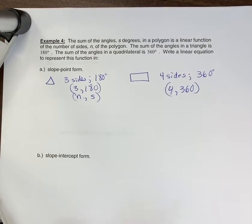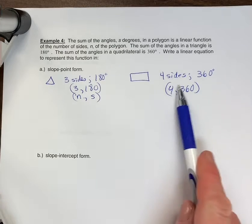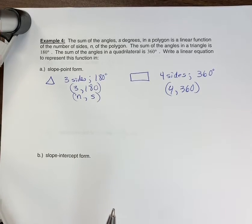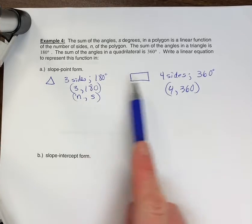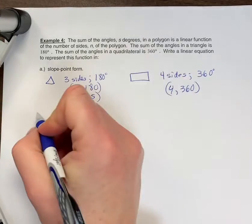So really, this is a problem that is writing your slope-point form when you're given two points. So in slope-point form, of course, we need a slope and a point.